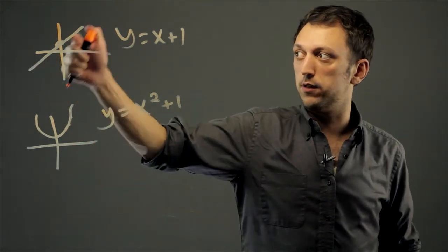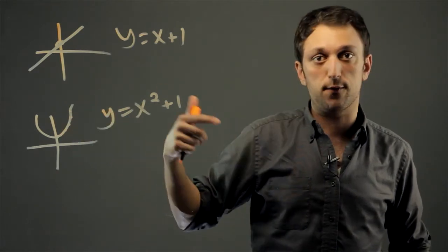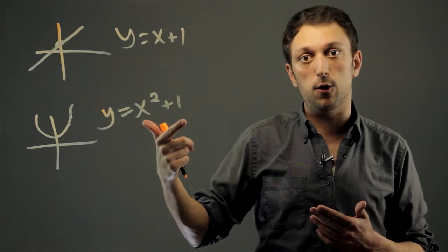The idea is here the slope is constant, and here every point, the difference between every two points, has a different slope.